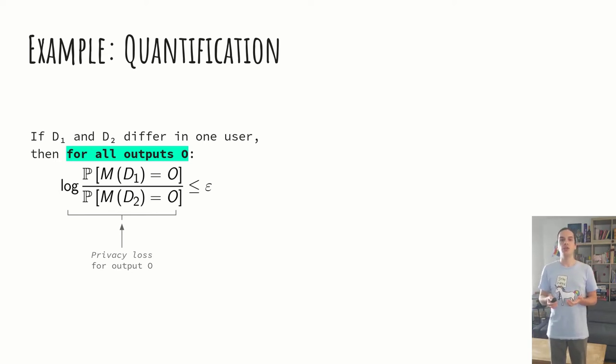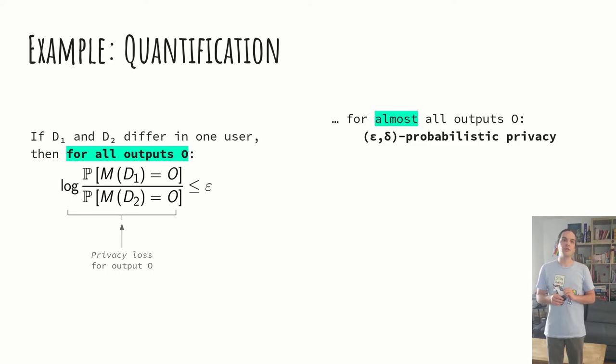Instead of doing that, you could instead consider the privacy loss except on its extreme values. So, you're allowing larger privacy losses than epsilon, but only with probability, let's say, delta. That might be, let's say, tiny, 1 to 1 billion or something. That's called epsilon-delta probabilistic privacy. Which is slightly different, it turns out, from epsilon-delta differential privacy, also called approximate differential privacy.